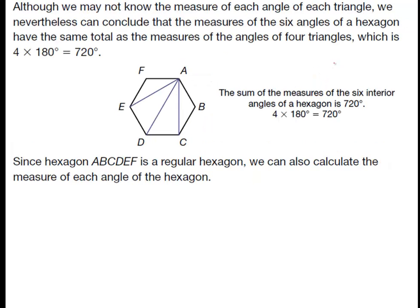The way we do that is we can know that the total measures of the interior angles of that hexagon is 720 degrees. And the reason we know that is because we've got four triangles, and they all total 180. And when you times those together, that means that the sum of all of these added together is 720.